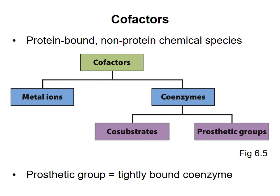This chart divides cofactors into two main groups: metal ions and coenzymes. Coenzymes are typically organic molecules such as NADH or coenzyme A. Coenzymes can be further divided into those that are permanently associated with a protein, called prosthetic groups, and those that are bound only transiently, which are called co-substrates on this diagram. We will see examples of all three main types of cofactors as we go through the electron carriers of the electron transport chain.